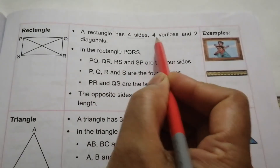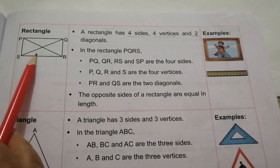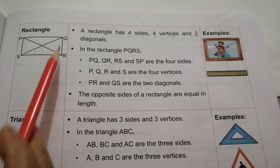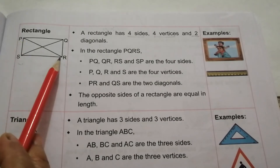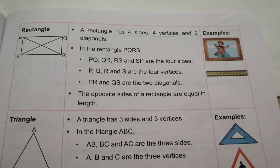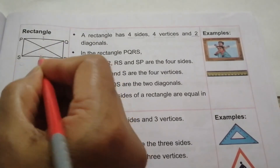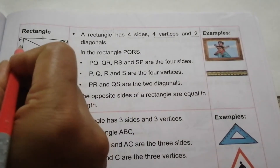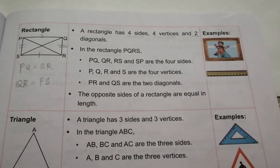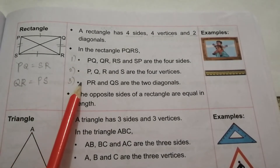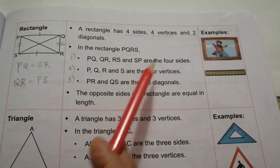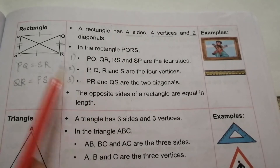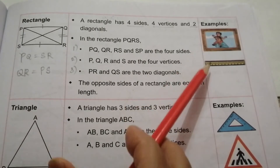A rectangle has four sides, four vertices and two diagonals. We can name this rectangle as PQRS. The sides are PQ, QR, RS and PS. The vertices are P, Q, R, S. The two diagonals are PR and QS. In a rectangle, the opposite sides are equal: PQ equals SR, and QR equals PS. If we compare square and rectangle, the first three properties are the same — both have four sides, four vertices and two diagonals — except the last one: in a square all four sides are equal, but in a rectangle only opposite sides are equal. Examples are a photo frame and a scale.